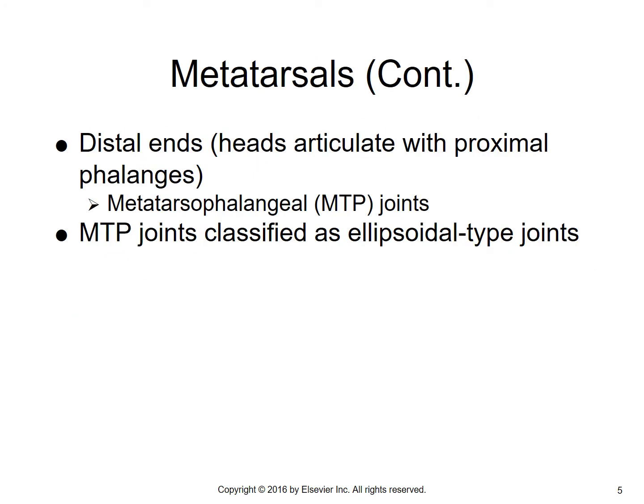For joints, we have articulations at two ends. We've got the joint where the metatarsal joins the phalanges — the metatarsophalangeal joint — and there are five of them. They are synovial condylar, or ellipsoidal, types of joints. Down at the bases, between the individual metatarsals, there are four intermetatarsal joints. They're between the bases of the adjacent metatarsals and are gliding types of joints.